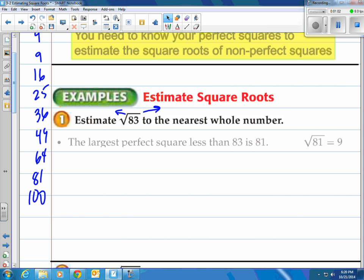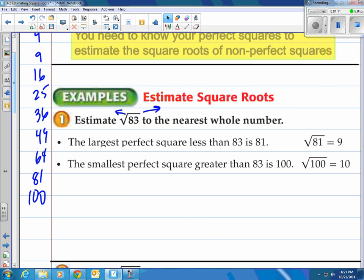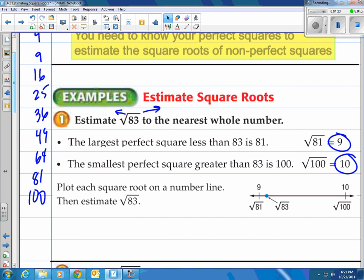To do that the largest perfect square less than 83 is 81. Square root of 81 is 9. And the smallest perfect square greater than 83 is 100. So the square root of 100 is 10. So we know that this number is going to be between 9 and 10 because the square root of 83 has got to be in between that. And if you look at the number line here you can see the square root of 83 is between the square root of 81 and the square root of 100.